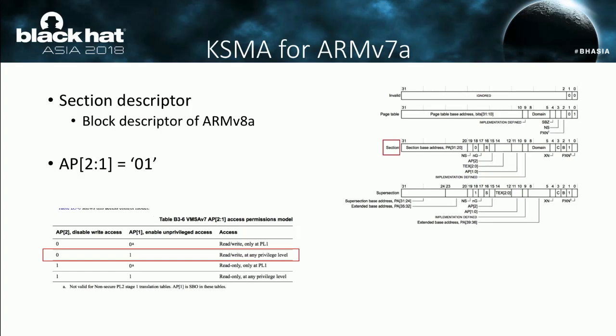For ARMv7, this exploitation technique can also work well. The section descriptor is very similar to the block descriptor of ARMv8. Meanwhile, the AP=0b01 combination also allows access to kernel memory at EL0. Since the idea is very similar I will not discuss it again.